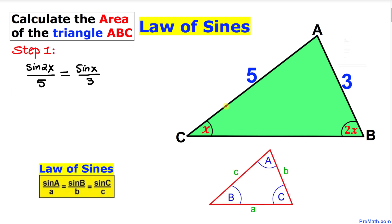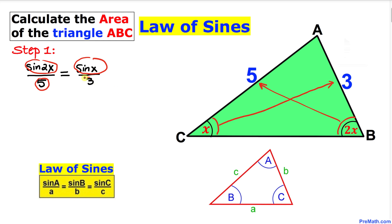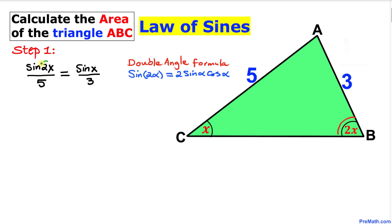We can write sine of angle 2x divided by its opposite side 5, equal to sine of angle x divided by its opposite side 3. Since we have a double angle 2x, we apply the double angle formula: sine of 2α equals 2·sine α·cosine α. So sine of 2x becomes 2·sine x·cosine x.